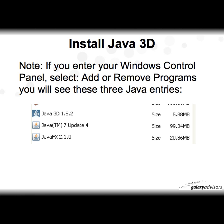To verify, go to your Windows Control Panel and select Add or Remove Programs. You'll see three Java entries: the Java 3D Library 1.5.2, Java 7 Update 4 — or a more recent release if one has come out since June 7th — and finally Java FX 2.1.0. These are the only three Java files you need installed to run Contour.